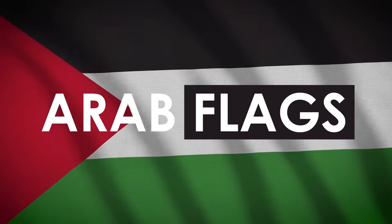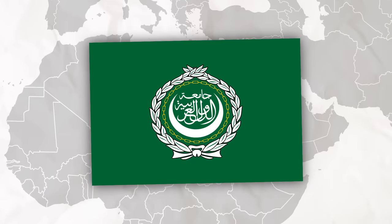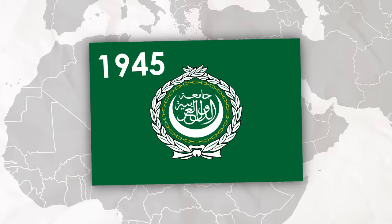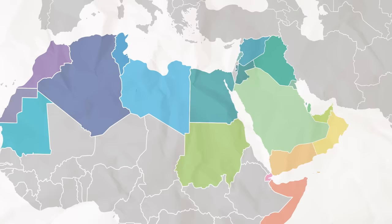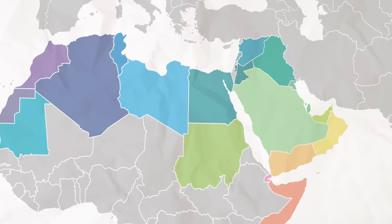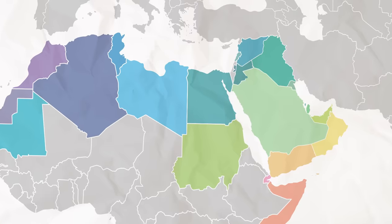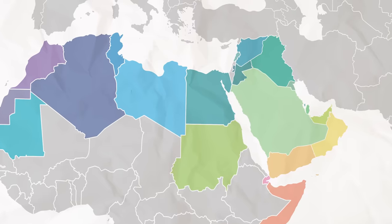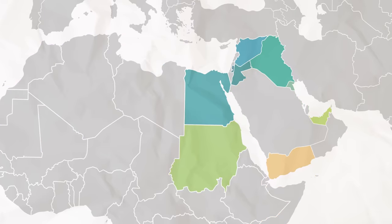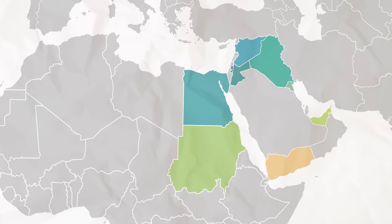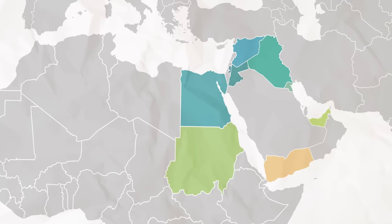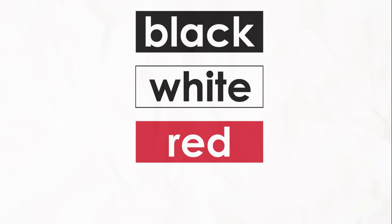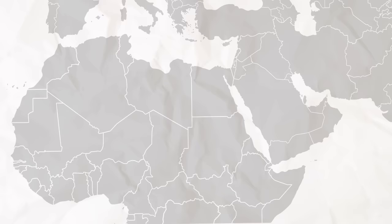Arab flags. The Arab League, formed in 1945, is an organization with 22 member states. Out of these 22 Arab nations, 9 of them share a reasonably similar flag using the pan-Arab colors: black, white, red, and green.